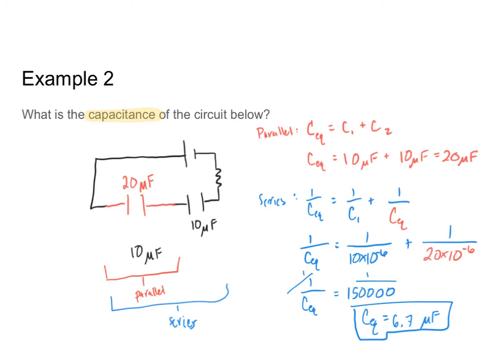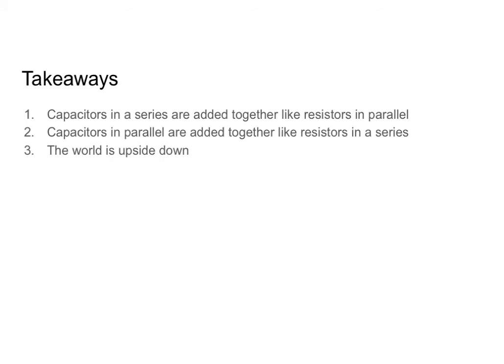And there you have it — I have figured out the equivalent capacitance of a slightly more complex circuit. So our takeaways: capacitors in series are added like resistors in parallel, so 1 over CEQ equals 1 over C1 plus 1 over C2 and so on. Capacitors in parallel are added like resistors in series, so CEQ equals C1 plus C2 and so on. The world is now upside down and you have completely new rules to learn, but I'm sure all of you are capable of doing this. Go ahead, try solving some problems with capacitors in a circuit. Best of luck and happy solving — we'll see you next time.